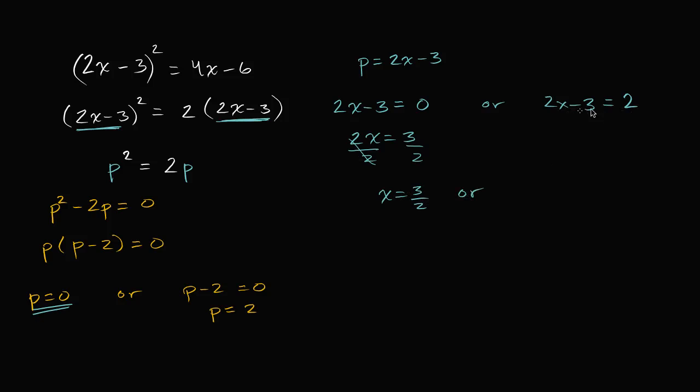Or, over here, if we add 3 to both sides, we get 2x is equal to 5. Divide both sides by 2. And you get x is equal to 5 halves.